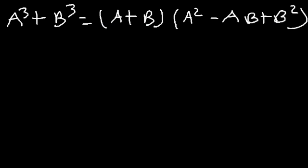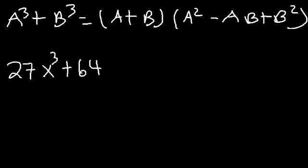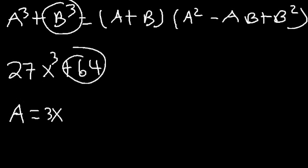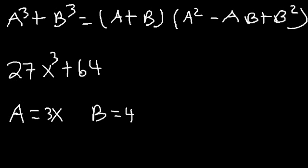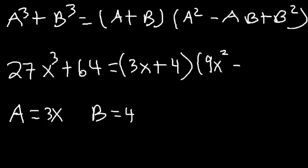Try 27x³ + 64. The cube root of 27x³ is 3x, so a = 3x. The cube root of 64 is 4, so b = 4. Then a + b = 3x + 4, a² = 9x², ab = 12x, and b² = 16. So the answer is (3x + 4)(9x² - 12x + 16).